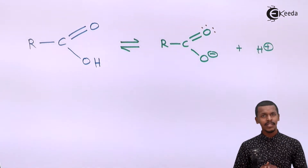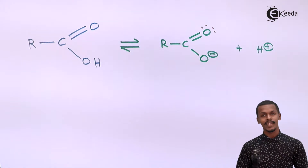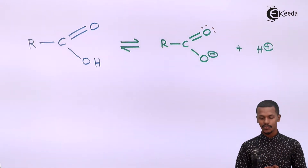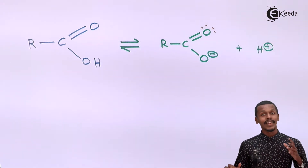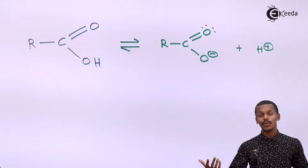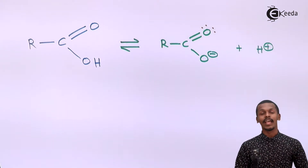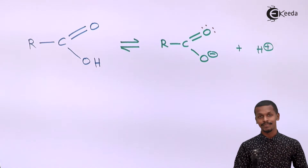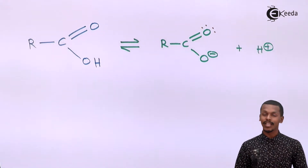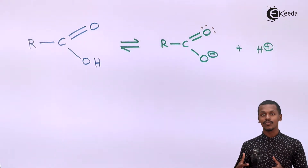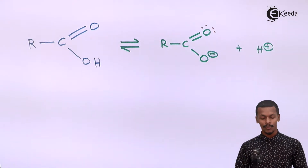To understand resonance and the resonating structures involved, it is essential to know that resonance is showcased by molecules that have pi bonds and delocalization of electrons, which takes place to form resonating structures.